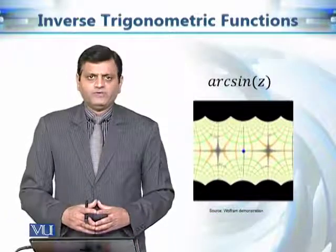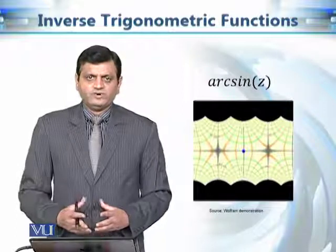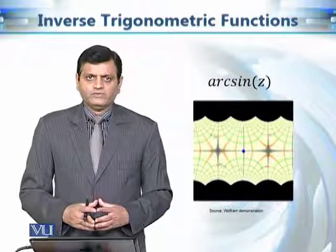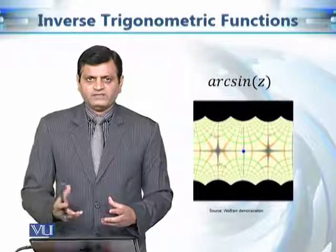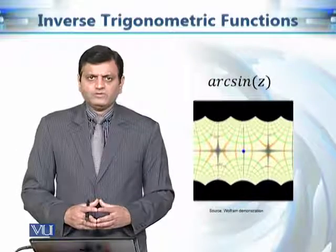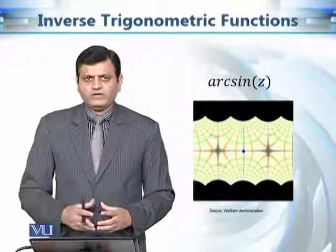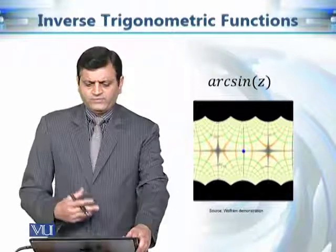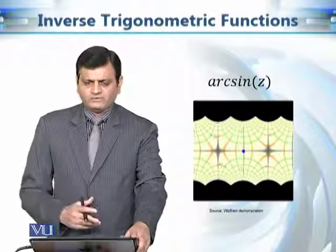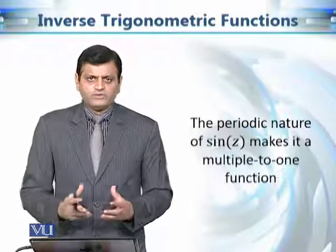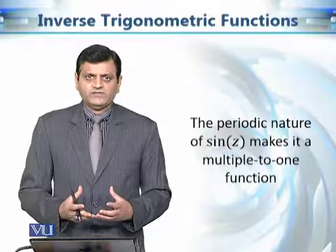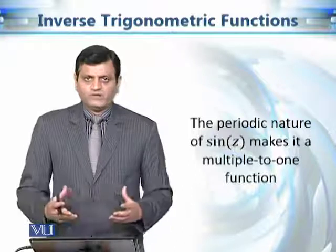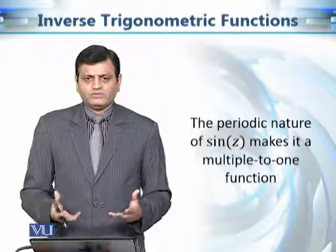We will start from the very basic trigonometric function — the inverse of sine — and we denote this with arc sine z. This notation has an advantage over the notation of sine raised to power minus 1 of z, because in this way we can also mention the principal branch of this function by just replacing small 'a' with capital 'A'. Now one thing to notice is the periodic nature of sine z makes it a many-to-one function, so it is not a 1-to-1 function, and if we want to talk about the inverse of sine z, it is not going to be a function.